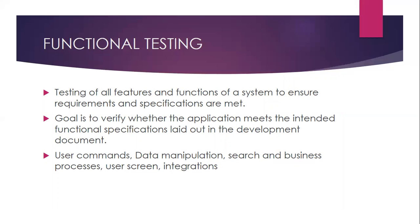A functional issue here might be that when a person leaves the organization, the departure time is recorded as 9 AM instead of the actual time. Another example is a time zone issue — the person is working in IST but the software records in PST. These are examples of functional defects. A good command on finding functional issues will help you build a strong career in software testing. The goal of functional testing is to ensure the application meets its intended functional specifications.